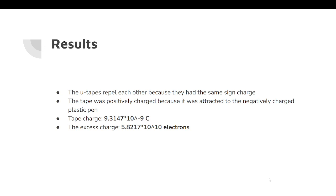The results that we found were that the U-tapes repel each other because they have the same sign charge. We said that the tape was positively charged because it was attracted to a negatively charged plastic pen. The tape charge was 9.3147 times 10 to the negative ninth, and the excess charge was 5.8217 times 10 to the tenth.